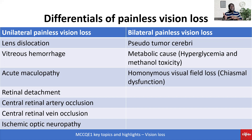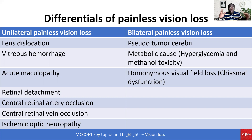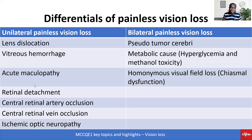For bilateral painless vision loss, think about tumor, pseudotumor cerebri, metabolic causes like hyperglycemia and methanol toxicity, and homonymous visual field loss from issues affecting the optic chiasm. I've used these two slides to tell us the differences between painless and painful, and whether it is unilateral or bilateral.